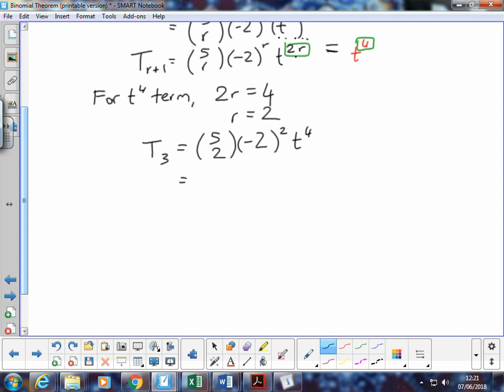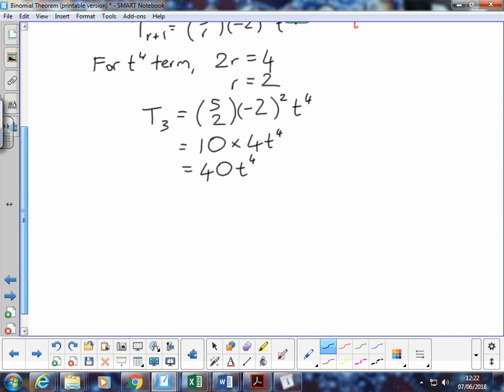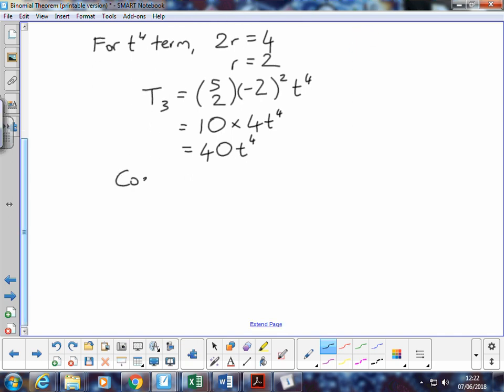And simplifying that, I have 5 choose 2 is 10, multiplied by negative 2 squared is 4 times t to the power 4. So the third term in our expansion is 40t to the power 4, which means that the coefficient of the t to the 4 term is 40.